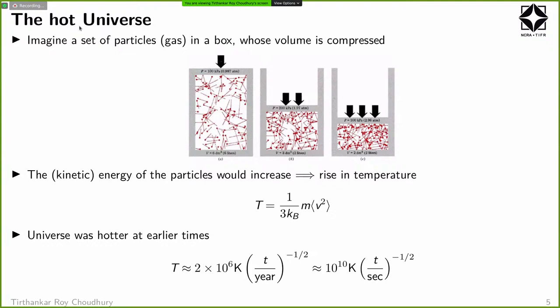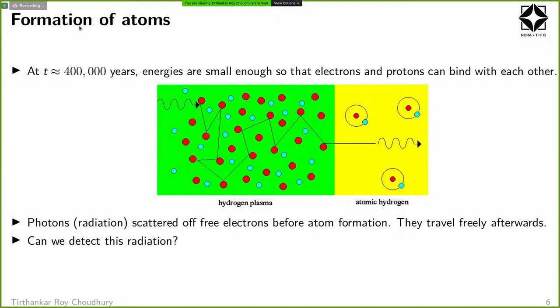We can do calculations and relate the temperature to the age of the universe. When the age of the universe was about a year, the temperature would be a couple of million Kelvin. When the age is of the order of a second, the temperature is much higher — 10^10 Kelvin and so on. All these things can be calculated once we know the model of the universe.